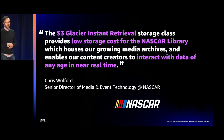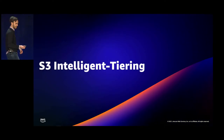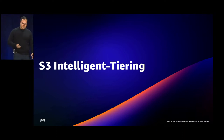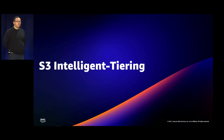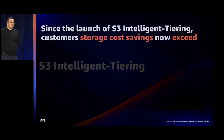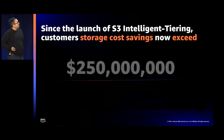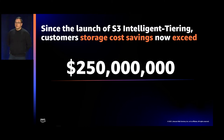Next, we'll deep dive into S3 Intelligent Tiering and the new access tier we announced earlier this week. By a show of hands, how many of you use Intelligent Tiering today? One of the things Andrew was talking about is that Intelligent Tiering is the only storage class that optimizes at the granular object level based on changing access patterns. Since the launch of S3 Intelligent Tiering in 2018, customer storage cost savings now exceed a total of $250 million in savings that we have passed back to customers.